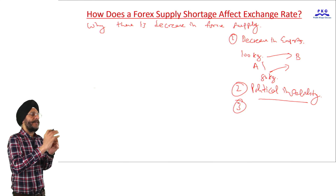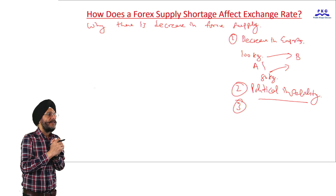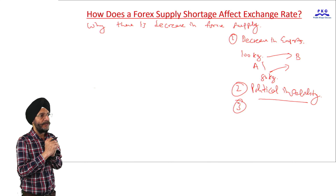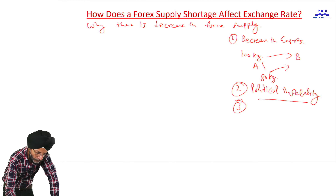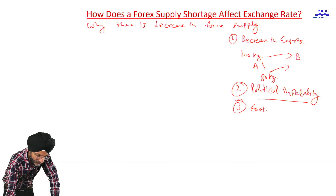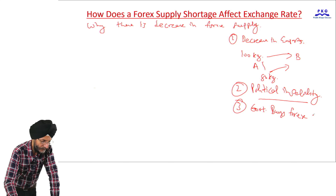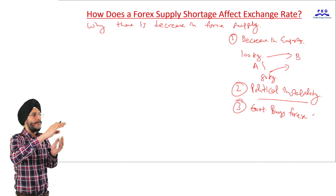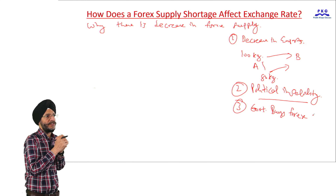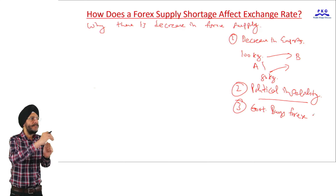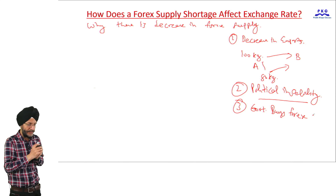If the investment climate in the country is not favorable, then the foreign exchange supply reduces. It may also be possible that the government buys foreign exchange. As part of their monetary or fiscal policy, the government sometimes buys foreign exchange. When that happens, the supply of foreign exchange in the market reduces.